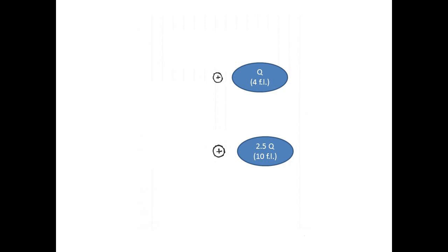Remember that the number of field lines leaving a charge has to be proportional to the magnitude of the charge. In this case, if we make Q 4 field lines, we have to make 2.5Q 10 field lines, so 2.5 times bigger.